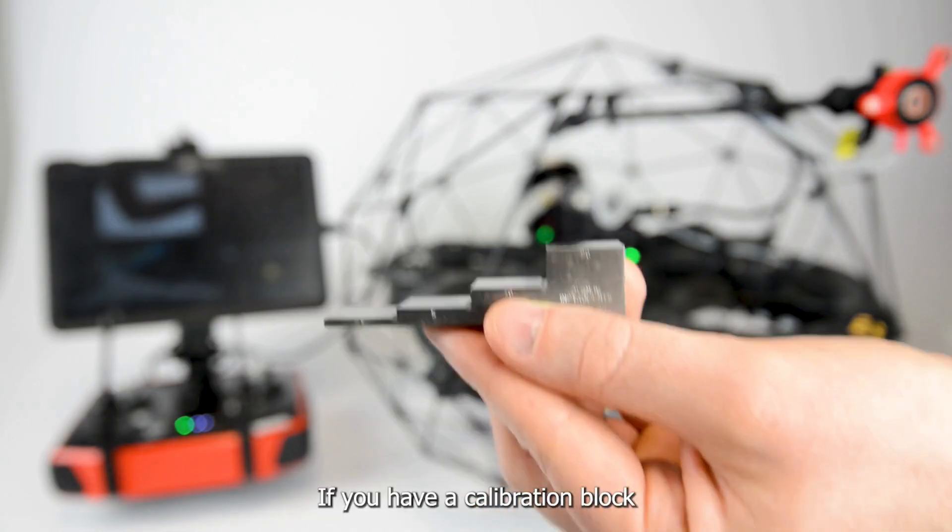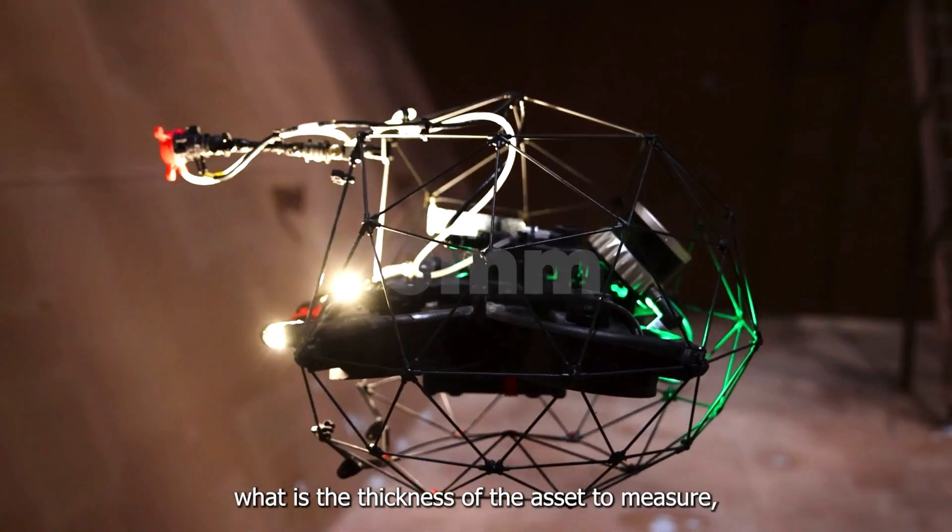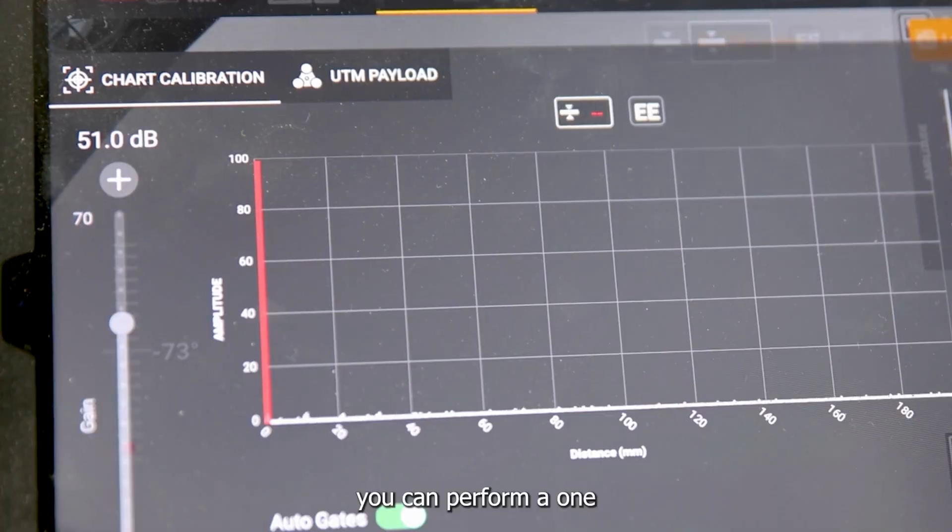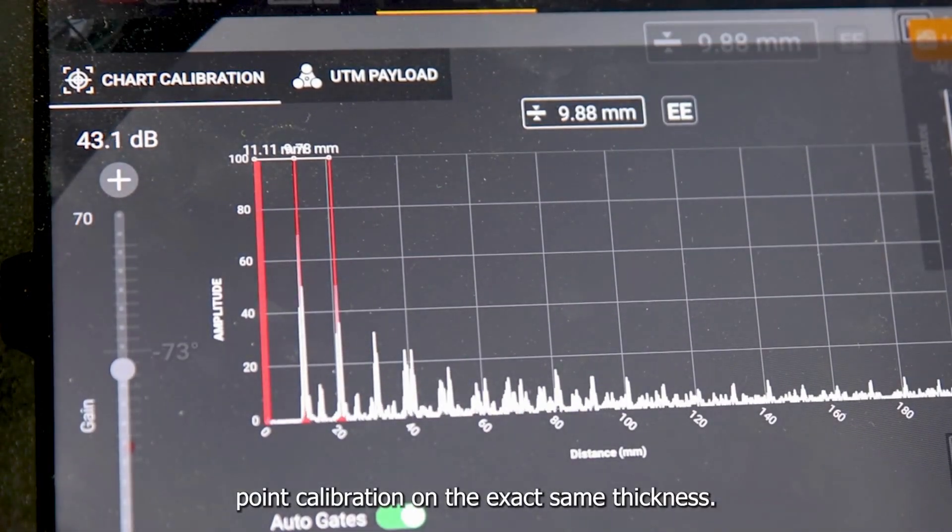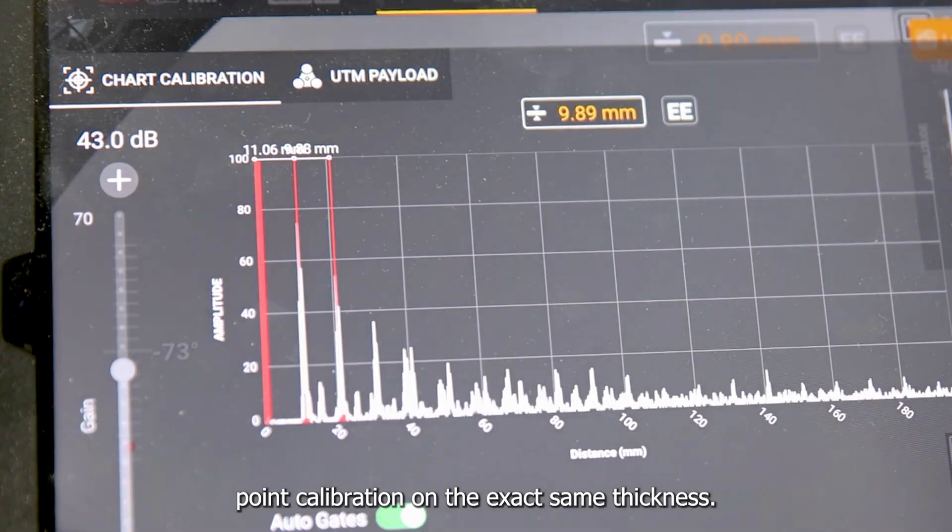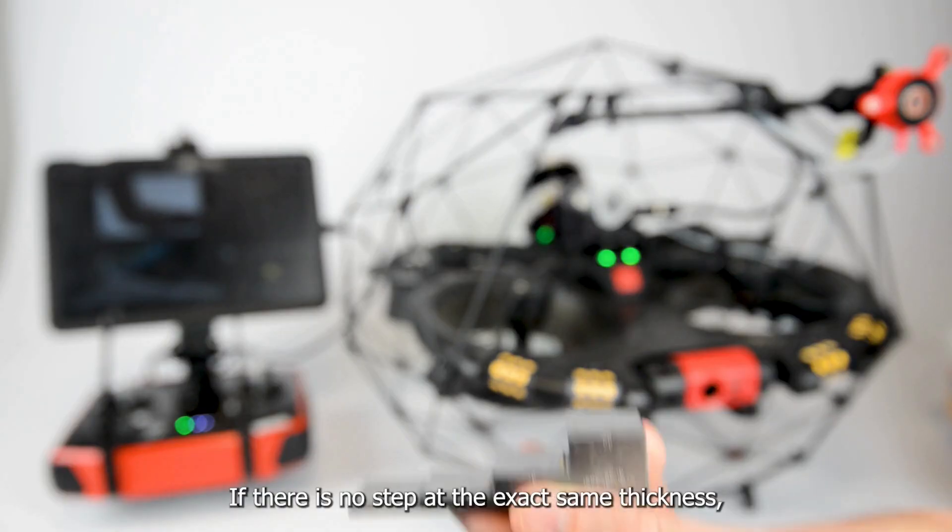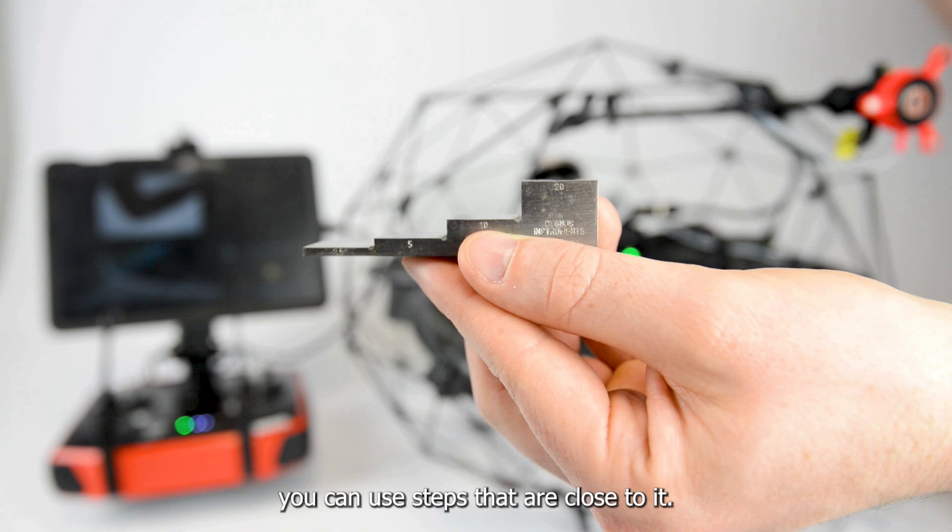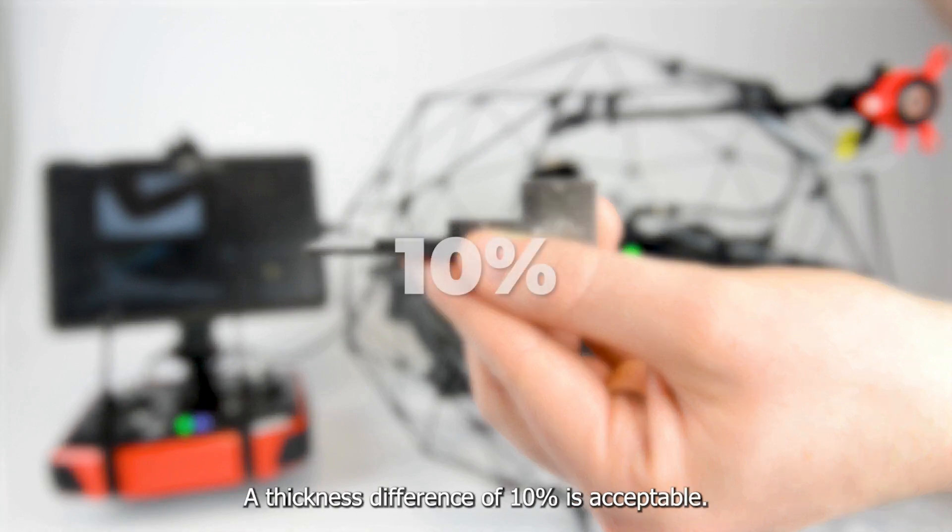If you have a calibration block and you know exactly what is the thickness of the asset to measure, you can perform a one-point calibration on the exact same thickness. If there is no step at the exact same thickness, you can use steps that are close to it. A thickness difference of 10% is acceptable.